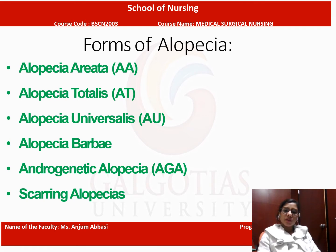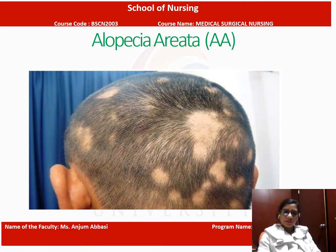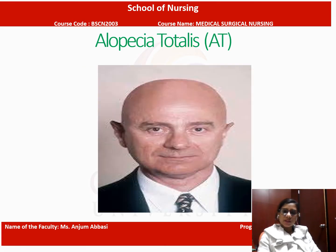There are different types of alopecia: alopecia areata, alopecia totalis, alopecia universalis, alopecia barbae, androgenic alopecia, and scarring alopecia. The first one is alopecia areata — you can see in this picture there are particular patches in random areas which are associated with loss of hair.